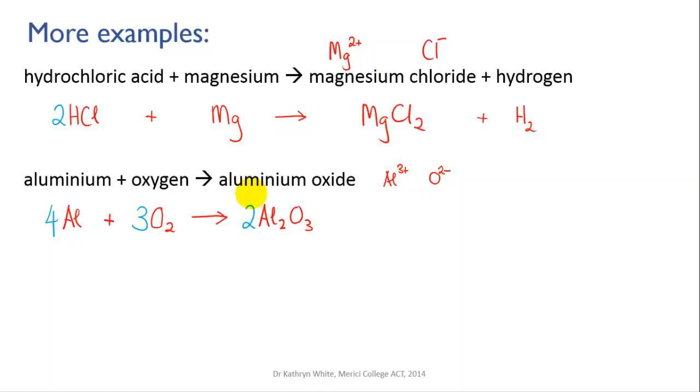Now notice that that balancing required a little iteration. We had a first go and then we had to make some modifications and go back and change things. That frequently happens when you're balancing equations. Don't be afraid of that; it's just a normal part of the process.